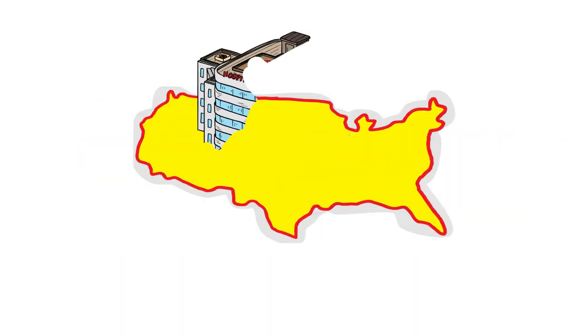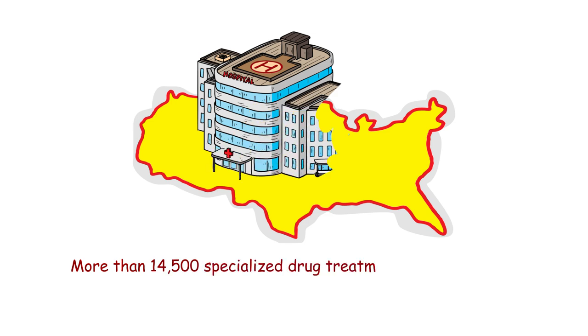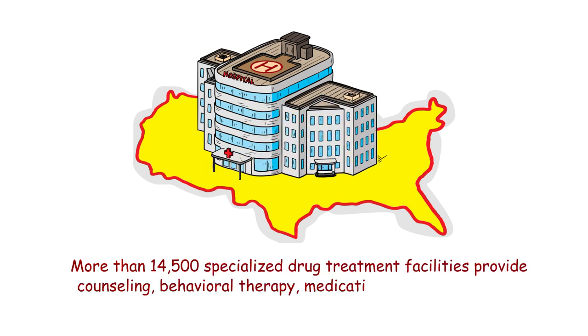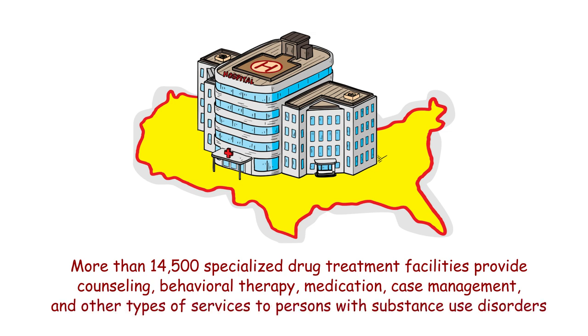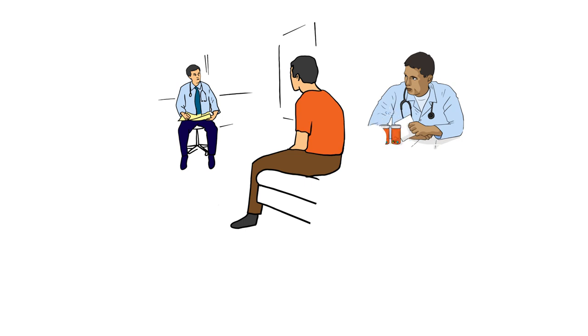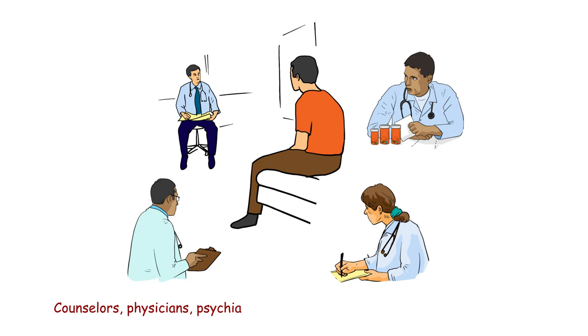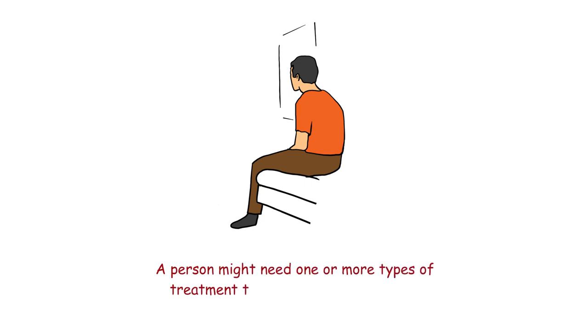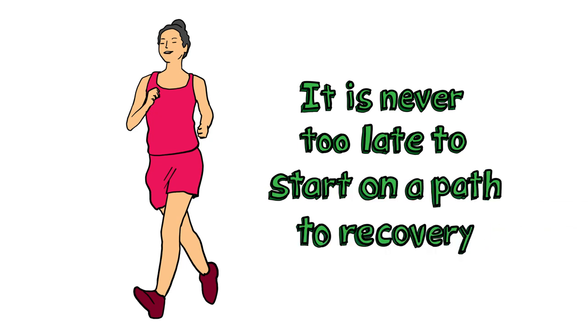In the United States, more than 14,500 specialized drug treatment facilities provide counseling, behavioral therapy, medication, case management, and other types of services to persons with substance use disorders. Along with specialized drug treatment facilities, drug abuse and addiction are treated in physician's offices and mental health clinics by a variety of providers, including counselors, physicians, psychiatrists, psychologists, nurses, and social workers. A person might need one or more types of treatment to get over their addiction. It is never too late to start on a path to recovery.